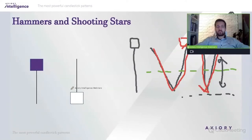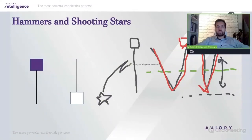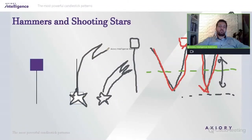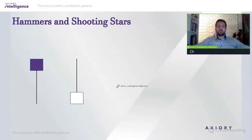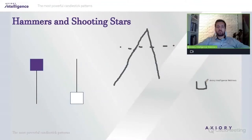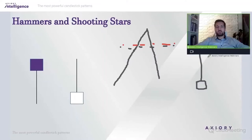What about shooting stars? A shooting star has a long head on top and a small body below. It's like a star shape. What shooting stars tell us is that the price went to a significant resistance and got rejected. The body can be bullish but the price tested that resistance and got rejected — making a shooting star a legitimate signal to go short. Sell at the shooting star, stop loss above the high.